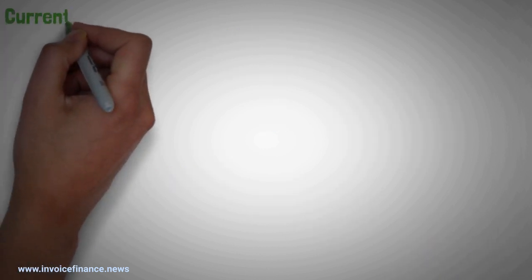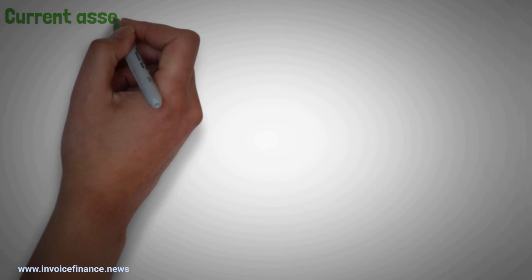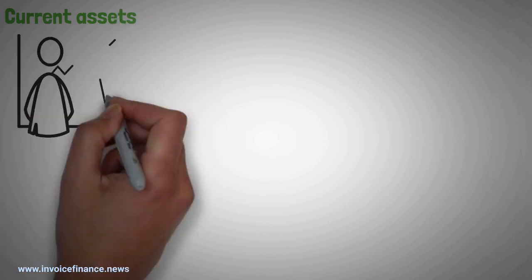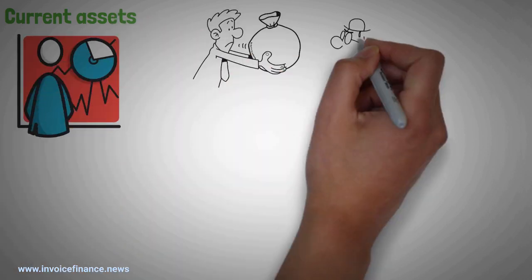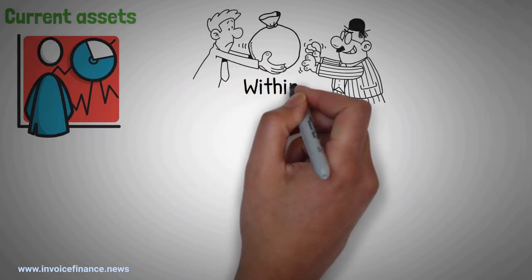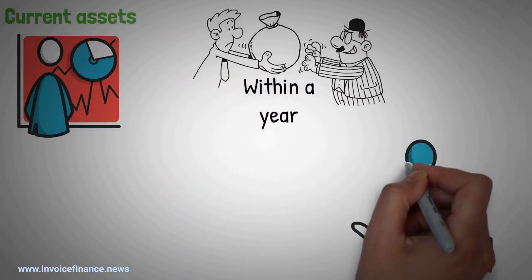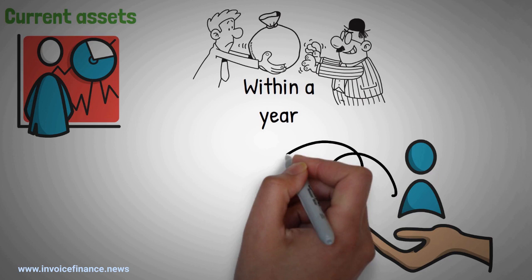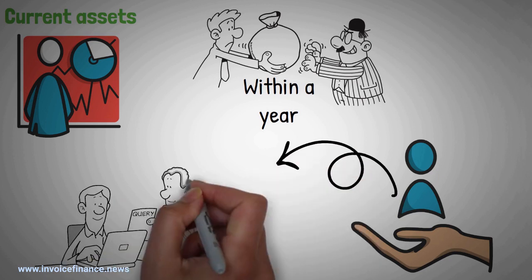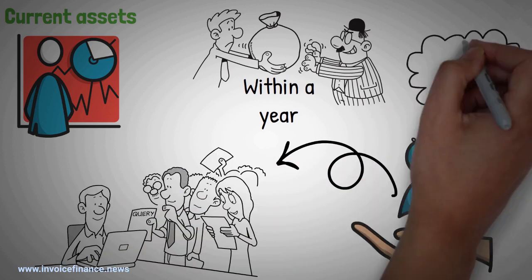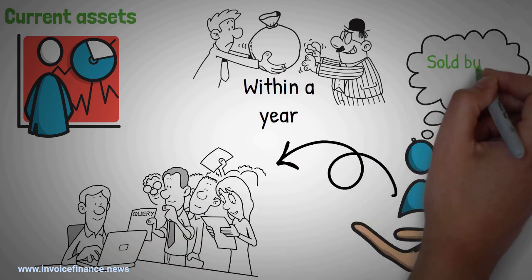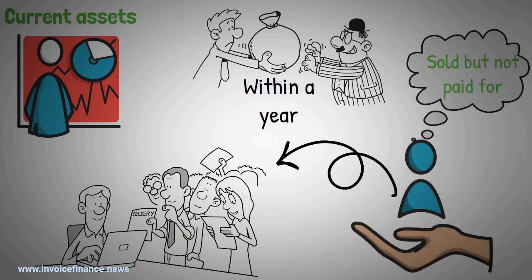Trade receivables are put in the current assets section of a balance sheet if the money is expected to be paid within a year. They represent the accounts receivable for goods and services that have been sold but not paid for.